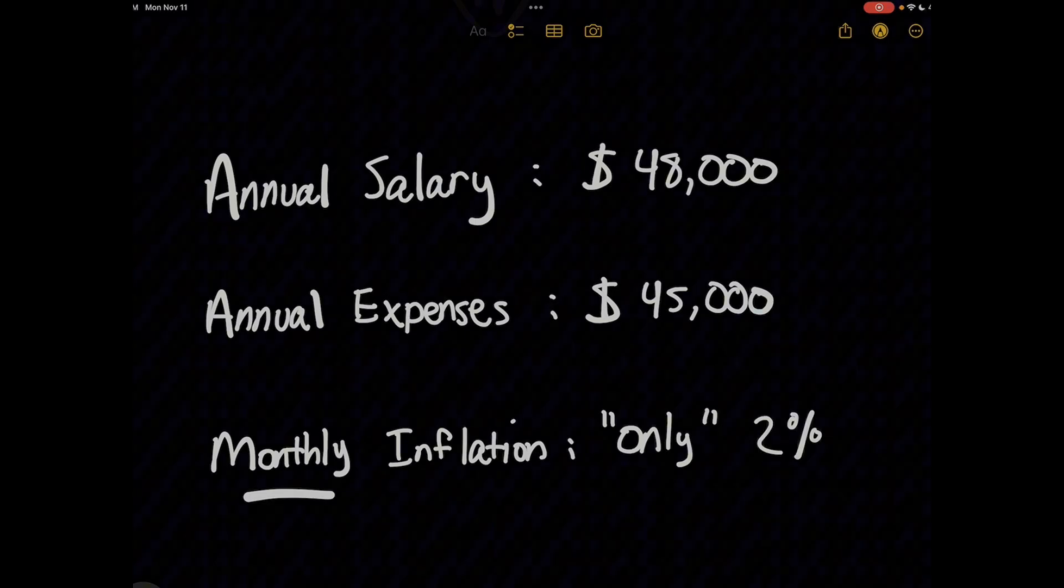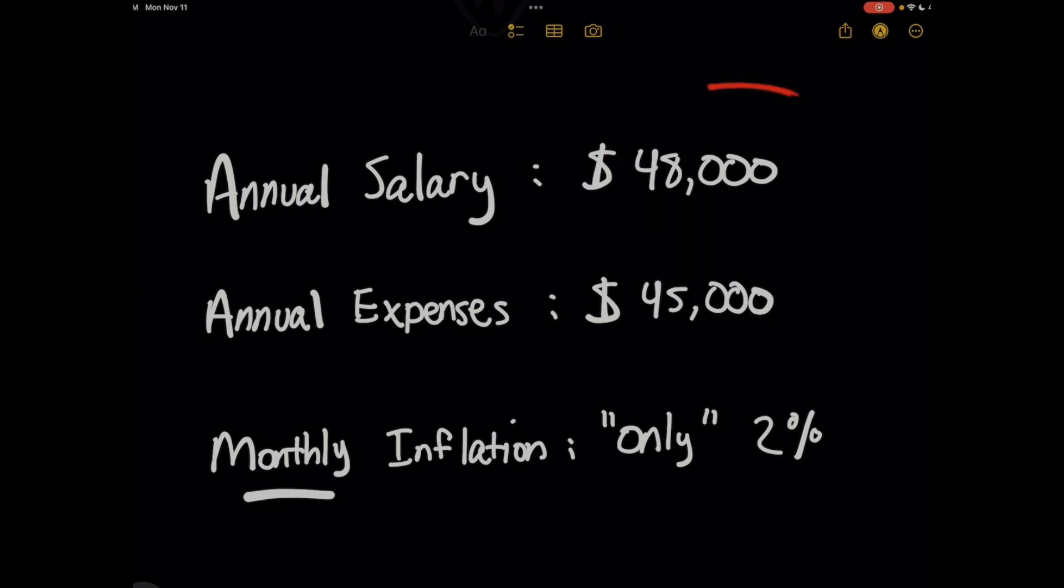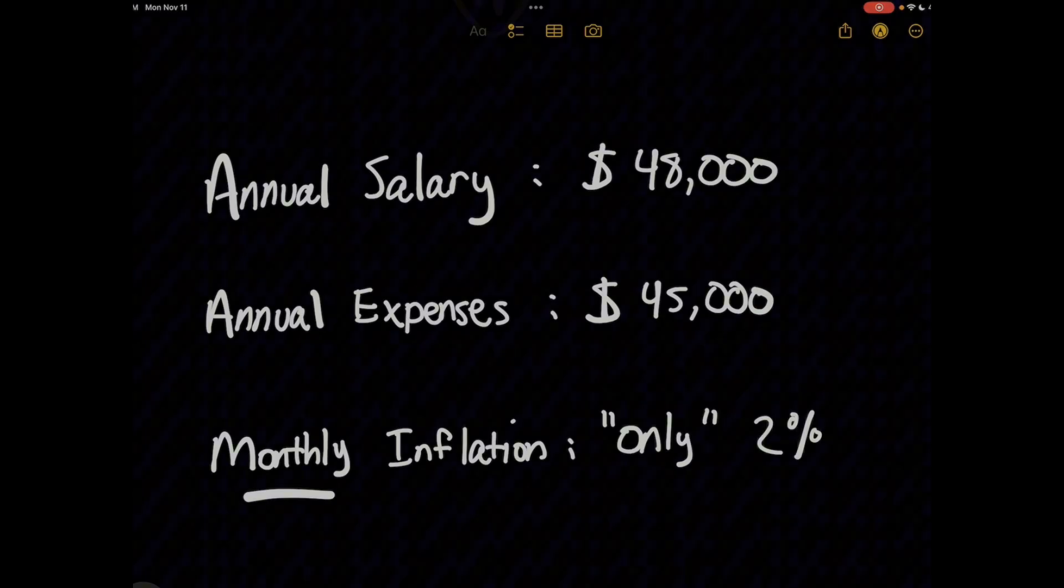So let's just say that you make $48,000 every year, and your expenses aren't far behind it, where you're spending $45,000. So you can just tell right there that you're making a net profit every year of only $3,000.